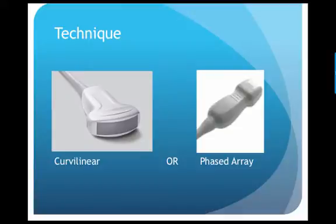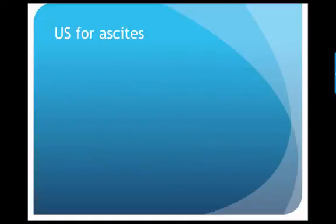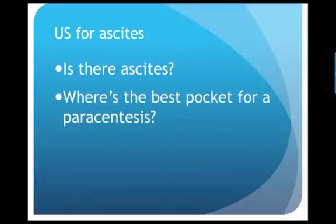For your technique, you're going to use either your curvilinear or phased array probe. Scan all four quadrants of the abdomen looking for the best pocket of ascites fluid. When ultrasounding for ascites, you're asking two basic questions: Is there ascites? And where's the best pocket for a paracentesis?